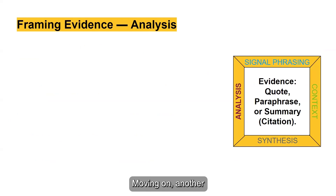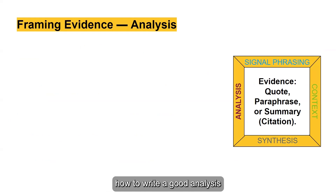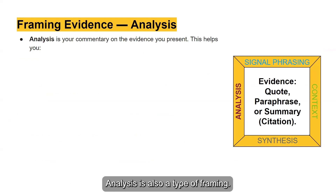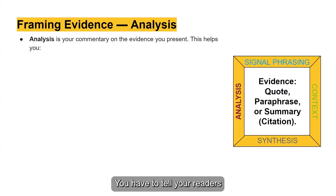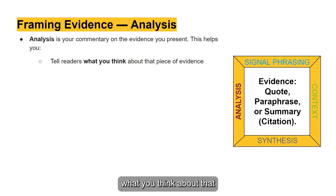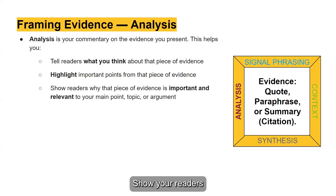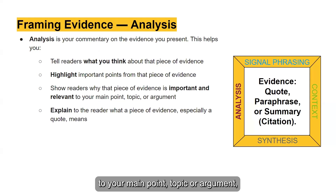Moving on, another example of framing evidence is using analysis. We've already discussed in detail how to write a good analysis in previous sections of this series. But to recap: analysis is your commentary on the evidence that you present, and it is also a type of framing. It's not enough to present evidence on its own — you have to tell your readers what it means. Analysis helps you tell readers what you think about the evidence, highlight important points, show why the evidence is relevant to your argument, and explain what a quote actually means.